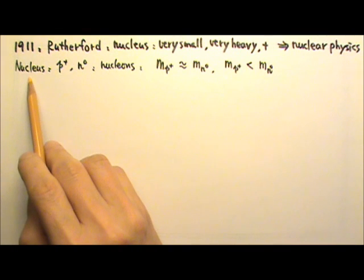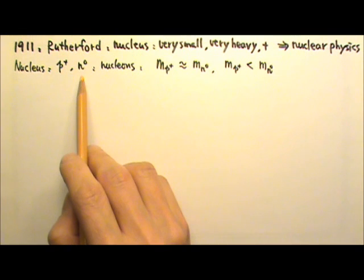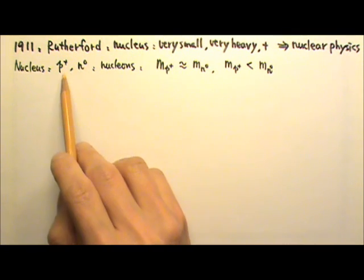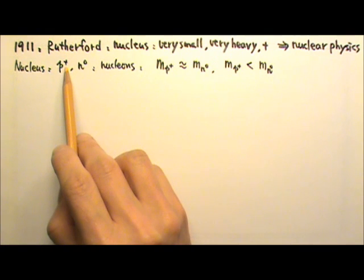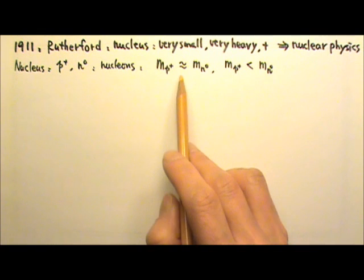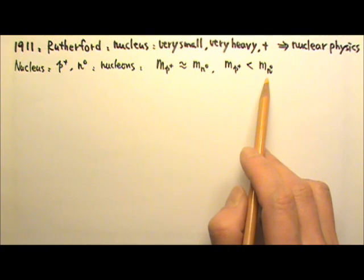We now know that a nucleus can be composed of protons and neutrons, which are called nucleons. A proton carries positive 1e of charge. A neutron carries no charge. A proton has almost the same mass as a neutron, although a neutron is very slightly, about 0.14% heavier.